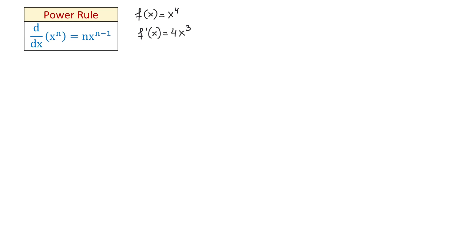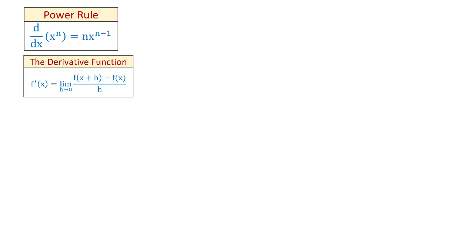Now one method of proving this rule is to use the definition of the derivative function. By definition, f prime of x equals the limit of f of x plus h minus f of x over h as h approaches 0. Although the power rule works for any real numbers, the proof I will use will show how this rule works for the natural numbers. So let's start with the function f of x equals x to the n-th power.